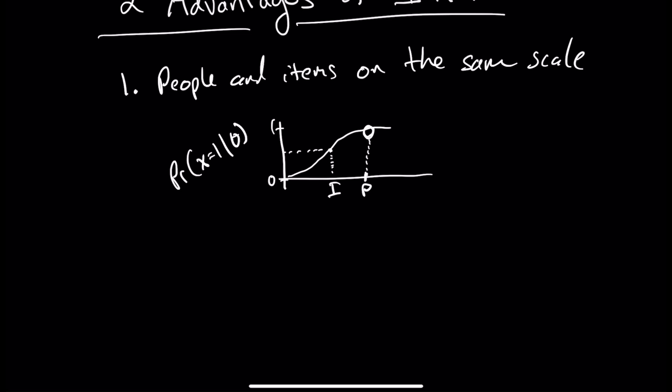And so this is where a major advantage of item response theory comes in because it allows us to make a comparison between items and people where we can say,